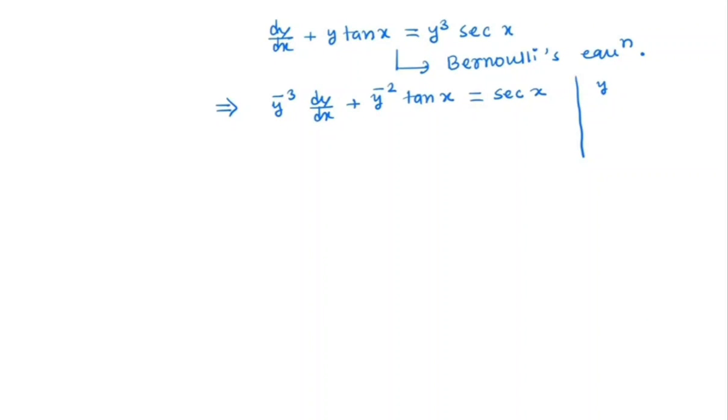So we let y to the power minus 2 is equal to u. That implies minus 2 y to the power minus 3 dy/dx is equal to du/dx.